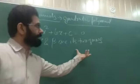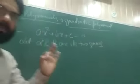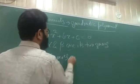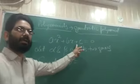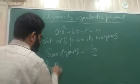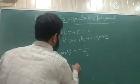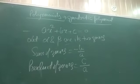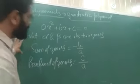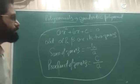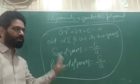Now this is a very important topic — please be careful. The sum of zeros (α + β) is given by the formula −b/a. The product of zeros (α × β) is given by the formula c/a. Please note this carefully — this is very important.